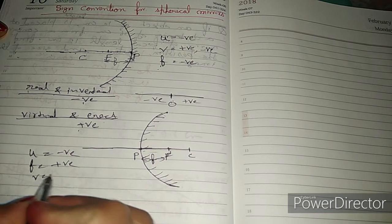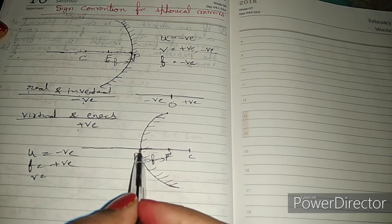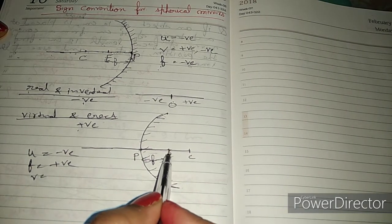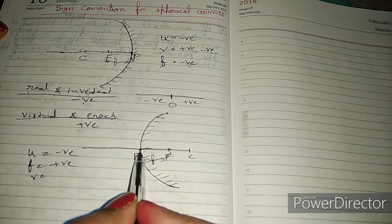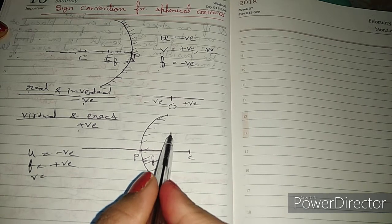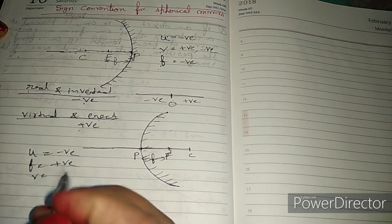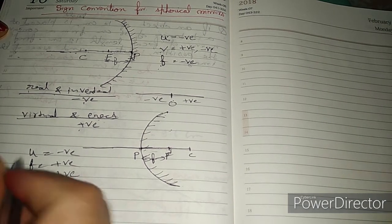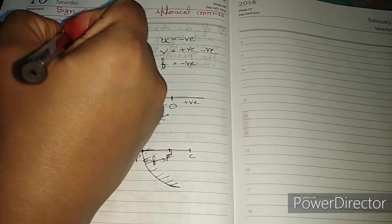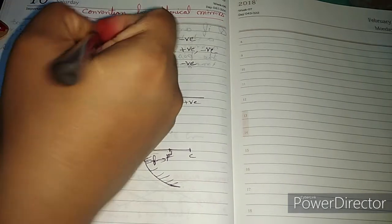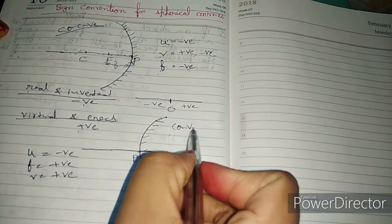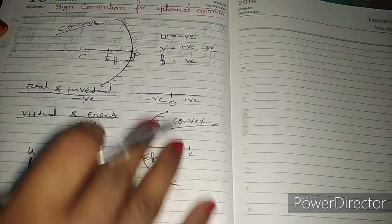And V, we have two cases. We have object image on right side and virtual and erect, therefore positive. So this is our convex mirror sign convention. These two terms U, V, F - it is negative and it depends on the mirror.